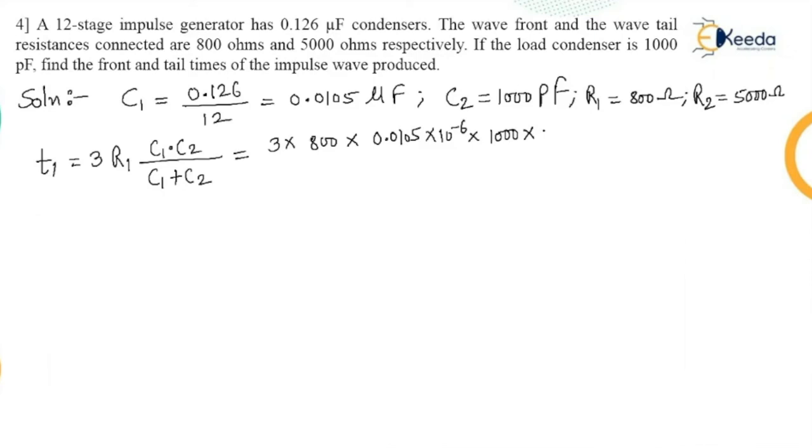C2 is 1000 picofarad, so it is converted into farad as 10 to the power minus 12 and the addition in denominator of both the capacitors. So this T1 comes out to be 2.19 microsecond.